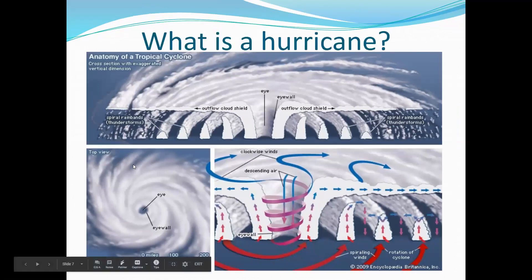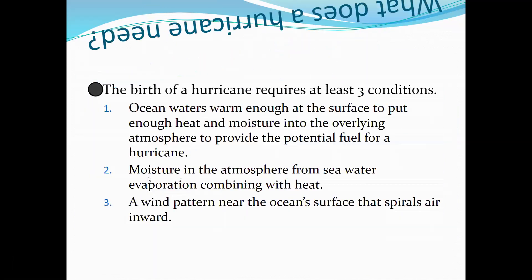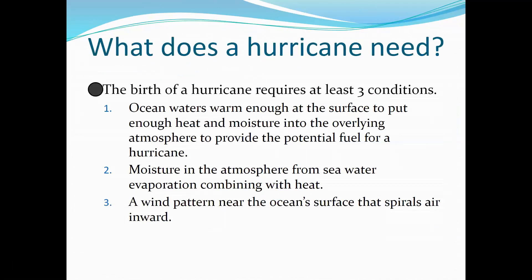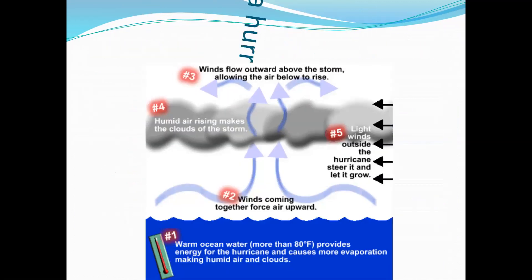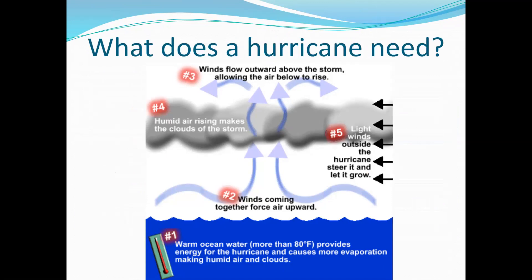This is a picture of a hurricane. Most of the time we look at pictures of hurricanes from the top view — this is if we took that picture and cut it in half, looking at it from the side. There are three things that a hurricane needs to form: it needs warm ocean water, moisture in the atmosphere, and a wind pattern that spirals the air inward. This graphic shows what hurricanes need — number one, warm ocean water of at least 80 degrees, and number two, wind coming together to force that air up.